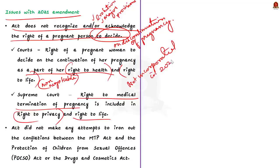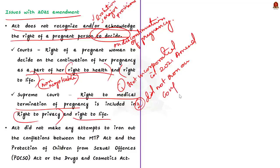The next issue is that the 2021 amendment did not make any attempt to iron out the conflicts between the MTP Act and the Protection of Children from Sexual Offences (POCSO) Act or the Drugs and Cosmetics Act. These are the two issues highlighted by the author. In this article discussion, we saw what abortion is, the evolution of abortion legislation in India, and some of the issues mentioned by the author in the editorial.